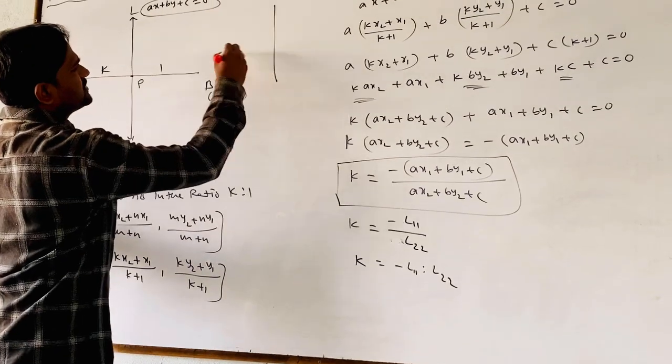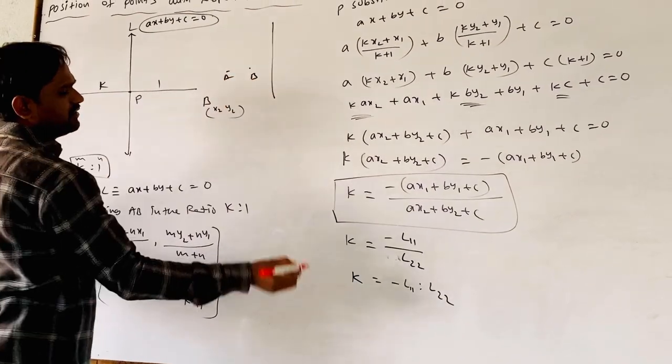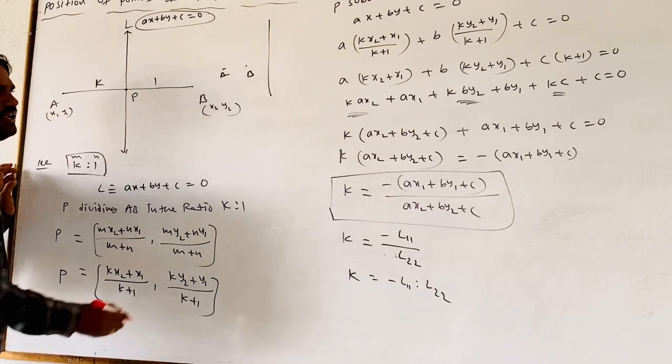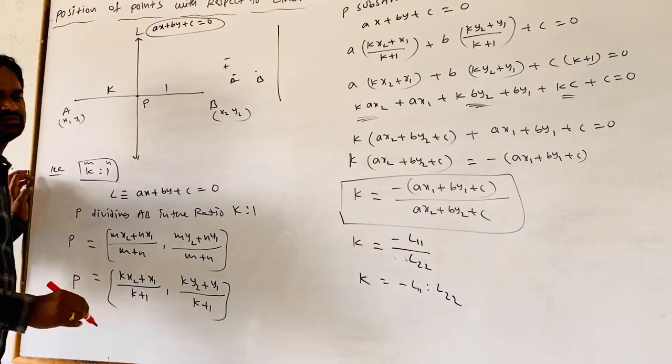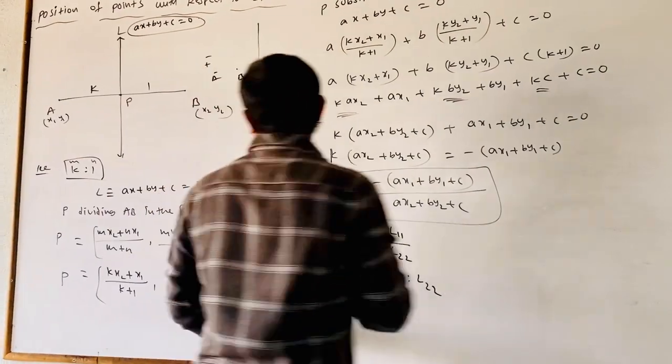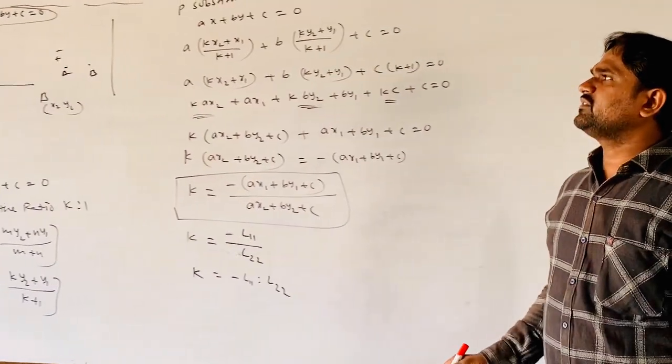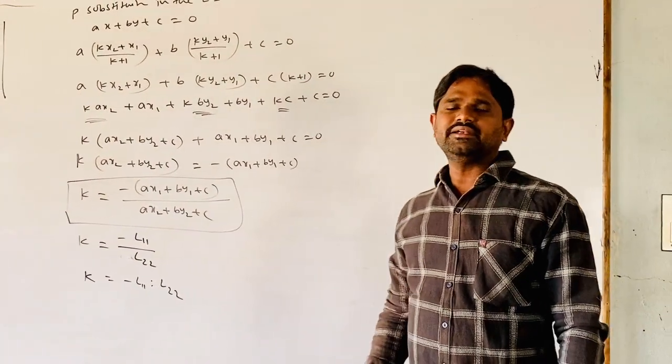If A and B are on the same side, L11 and L22 have the same sign, both plus or both minus. This is about the position of a point with respect to a line. Thank you.